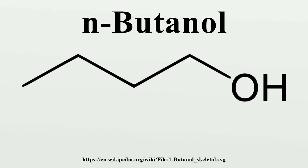N-butanol is produced industrially from the petrochemical feedstock propylene. Propylene is hydroformylated to butyraldehyde in the presence of a rhodium-based homogeneous catalyst similar to Wilkinson's catalyst. The butyraldehyde is then hydrogenated to produce N-butanol.